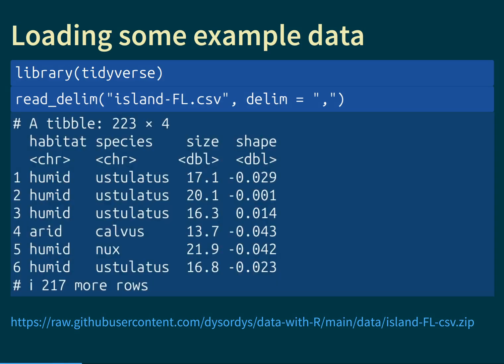Looking at the output from this function, we see our old friend: the table of land snails from Floriana Island on the Galapagos. Each row of the table is a single individual. It tells you which habitat it comes from — humid or arid — which species it belongs to, what the measurement of its shell size is, and what the measurement of its shell shape is.